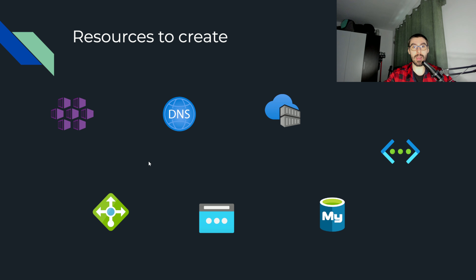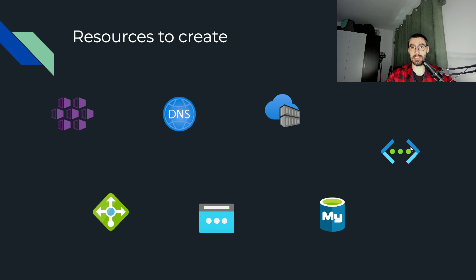Then we would need the load balancer for the ingress controller, as well as a public IP address for our application to be advertised on. And finally, we would need a MySQL database to host the data for our backend microservices, as well as a virtual network where our Azure Kubernetes Service nodes would sit inside of. That's basically all the resources we need to concern ourselves with.